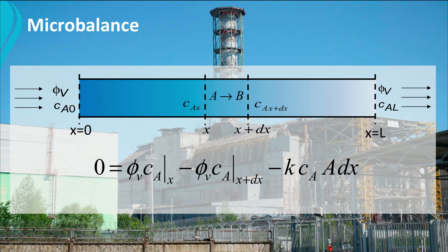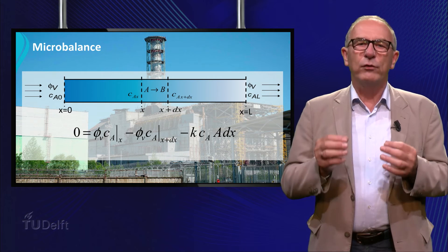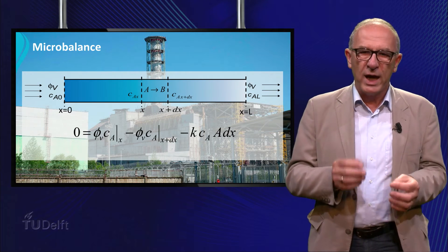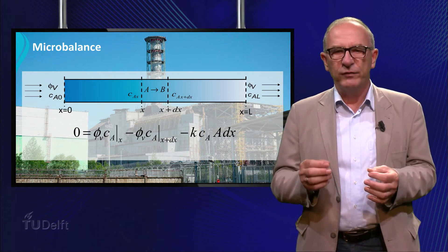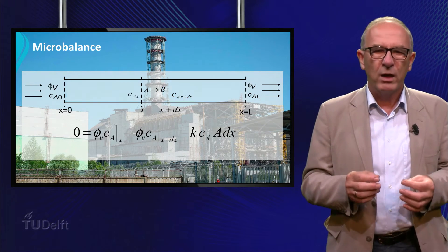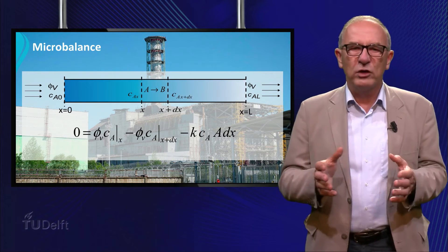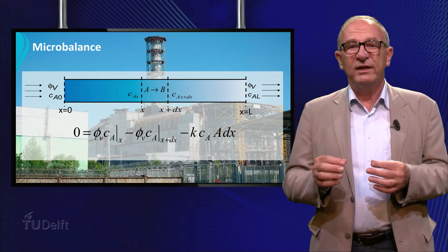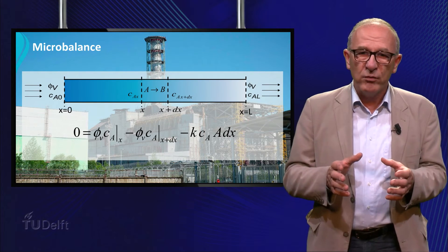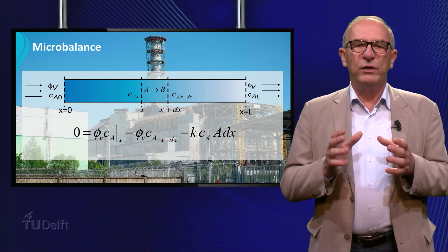As you notice, we only consider a very small volume of the tube between x and x plus dx, and look how the concentration of component A changes as a function of the length of the reactor. If we divide all the terms by dx and take the limit of dx approaches zero, we obtain the following differential equation.